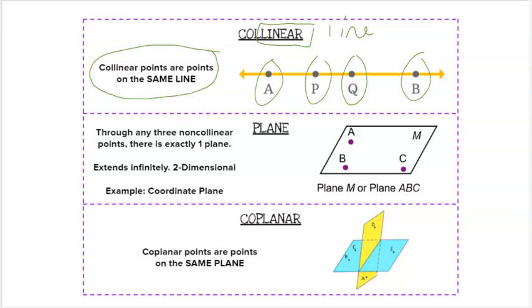Plane. Through any three non-collinear points, there is exactly one plane. Three non-collinear points, which means they don't all exist on the same line. This extends infinitely and is two-dimensional.